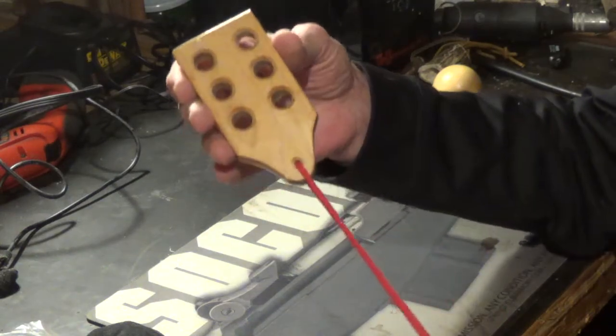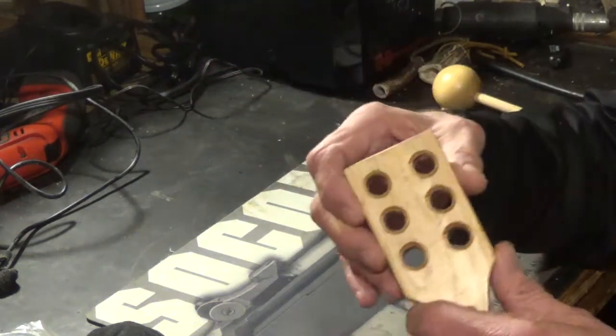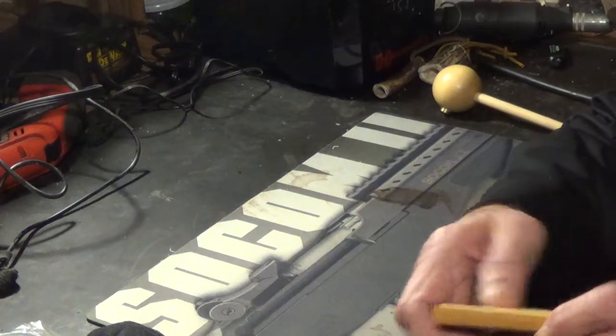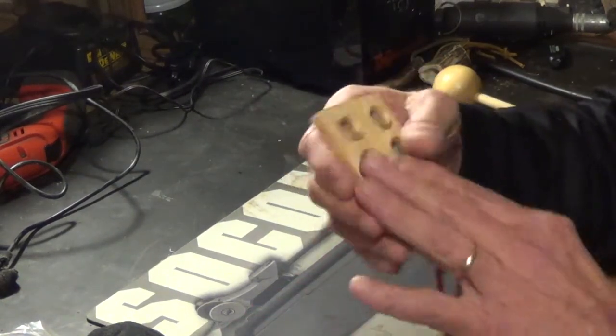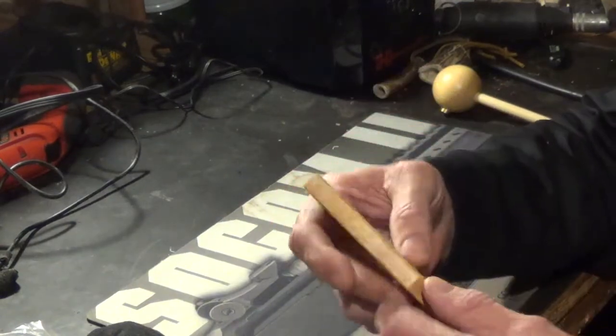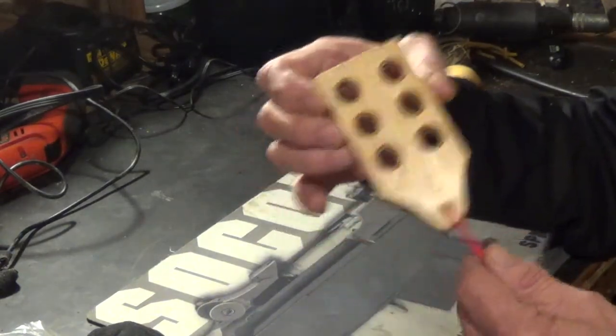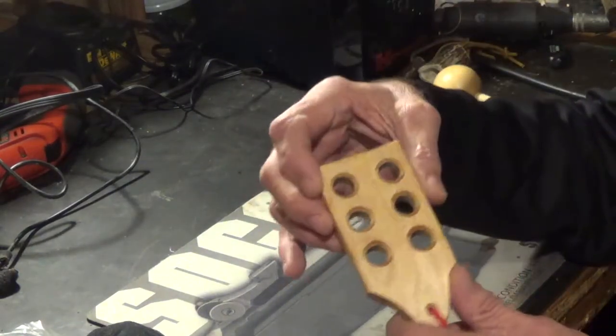I ordered this from Track of the Wolf and I put a little braided cotton cord on it. As well, I put a little true oil on it to kind of seal the surface. It comes already sanded down and chamfered a little bit on the edges. Really good looking little loading block and doesn't cost a lot of money.